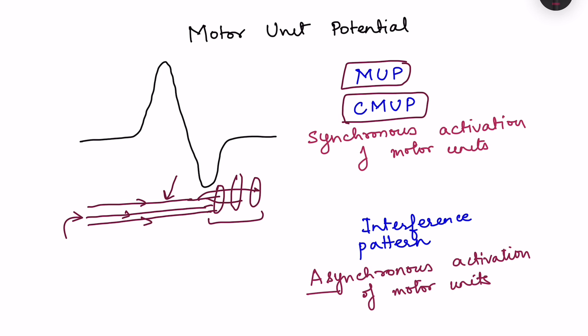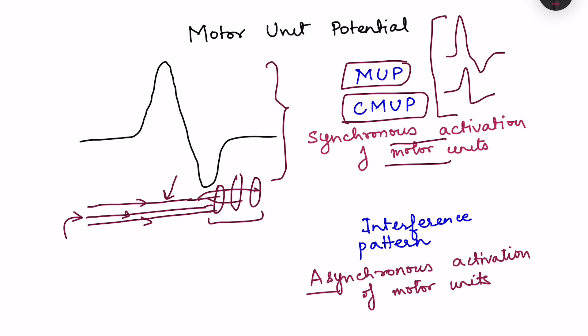The motor unit potential recorded is either a biphasic or triphasic response, occurring due to synchronous activation of the motor units — action potentials in all motor units occur at the same time and get added up, giving a biphasic or triphasic response. However, when we ask a person to voluntarily contract the muscle, the electrical activity we get is an interference pattern.